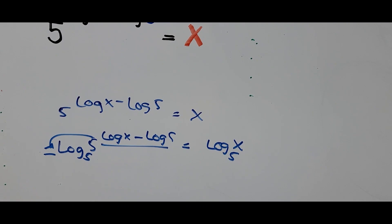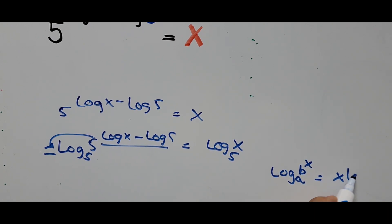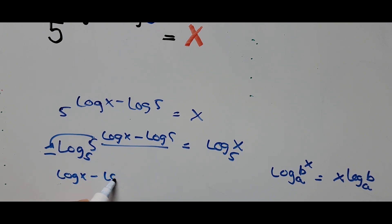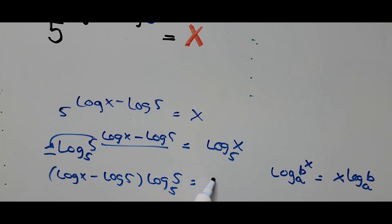The exponent rule states that log of B to base A, raised to exponent X, equals X times log of B to base A. So we put the exponent to the left side as a coefficient. This becomes: (log of X minus log of 5) times log of 5 to base 5, equals log of X to base 5.